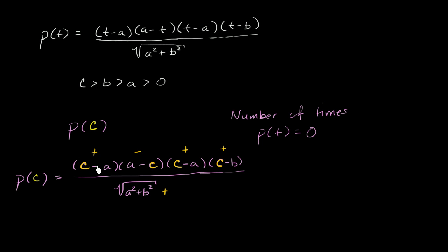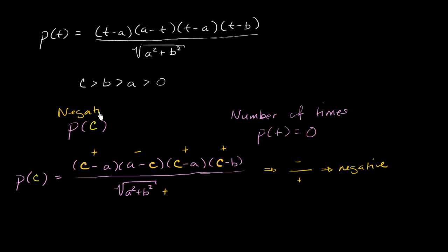So in the numerator, we have a positive times a negative times a positive times a positive. That's going to be negative — a negative over a positive gives us a negative. So we don't know the actual value, but we know that p of c is a negative value. So if the other quantity is positive, then we can make a statement.